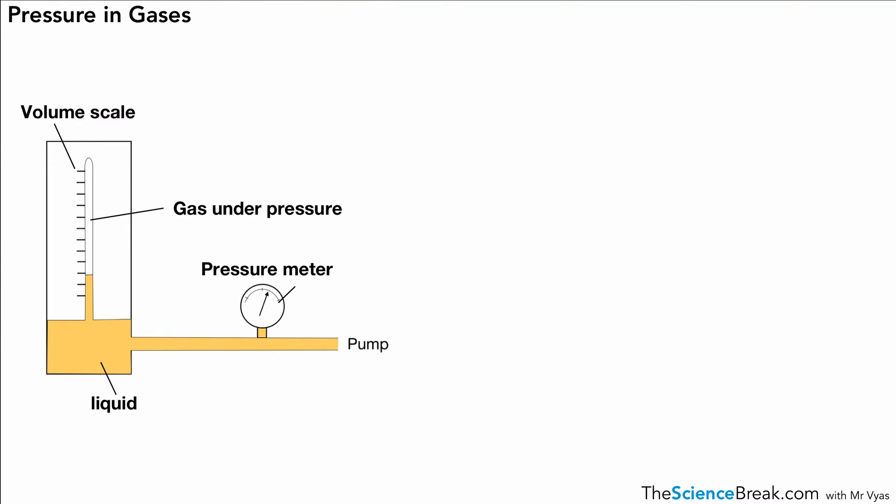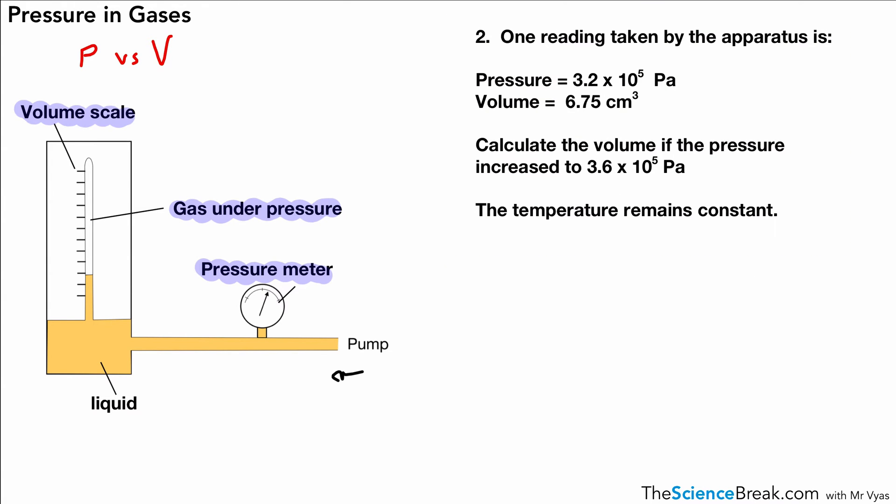Let's finish with one more question using the equation. Here's some apparatus: a pump that pushes liquid into an enclosed area, gas under pressure in a tube, a volume scale, and a pressure gauge. We can create different pressures and measure volume. Try this question and we'll go through it together.